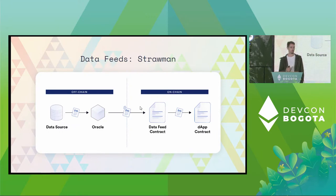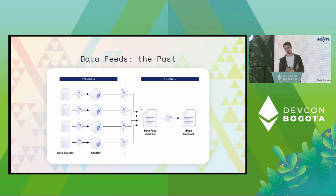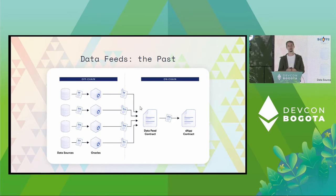How can we solve this problem? The most common approach today is to decentralize the Oracle — have a bunch of independent oracles all provide the system together. We now have multiple oracles that each fetch a price from a data source and then send their individual signed observations to our contract running on chain. That contract on chain stores the observations until there's a sufficient number of them, then aggregates them into a single price using robust aggregation.